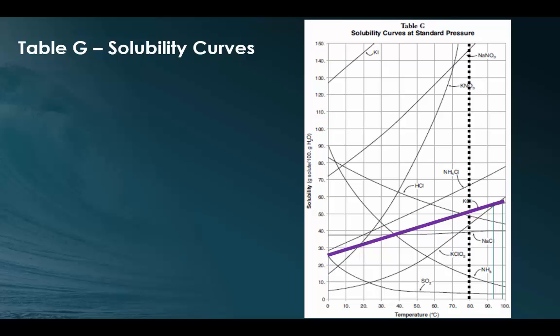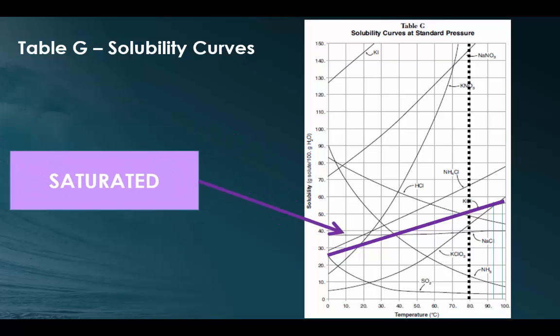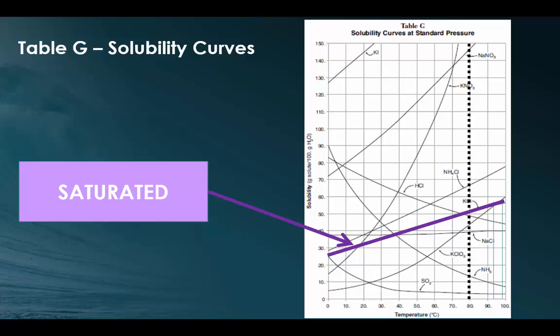So again, looking at table G, let's go back to our potassium chloride line, and let's specifically look at 80 degrees Celsius, which I marked on this diagram in the dotted black line. So we know that on the purple line, we are saturated, which is the minimum amount of solute that can go into our solvent. And again, this is just for KCl. We're only looking at the KCl line. But the same things we're talking about right now for KCl can be applied to any of the other lines.